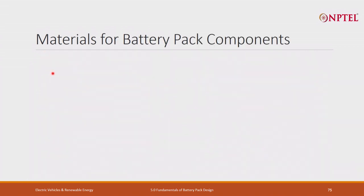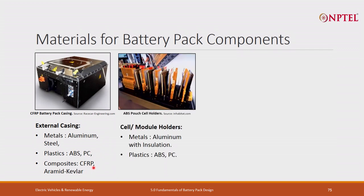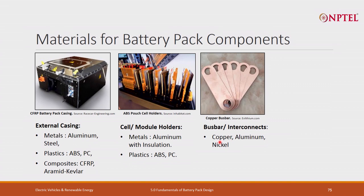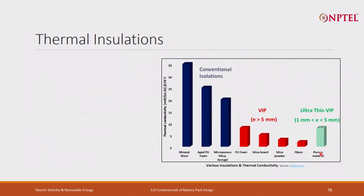Various materials are used in battery pack components: external casing uses metals like aluminum and steel, plastics like ABS and PC, and composites like CFRP, aramid, and Kevlar. Cell and module holders are generally aluminum with insulation for high thermal conductivity but no electrical conductivity, or plastics like ABS and polycarbonate. Bus bars and interconnects are generally made of copper, aluminum, or nickel. For the thermal management system, cold plates are generally aluminum, heat pipes are generally copper, and coolant tubes are aluminum, ABS, EPDM, or PTFE.